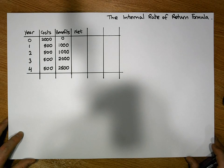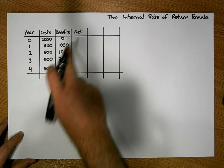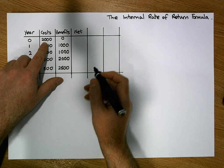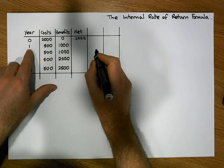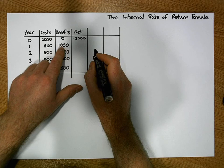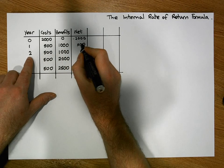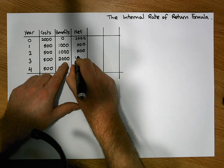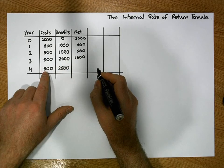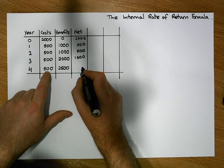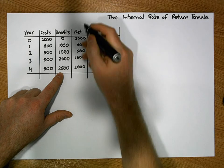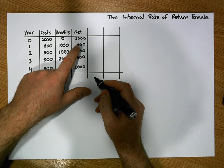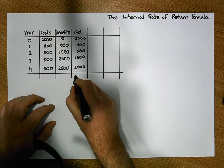More importantly, we're trying to figure out what the interest rate should be for a project to break even. From a naive perspective, in year zero the net position — the difference in benefits to costs — would be -€2,000. In year one, benefits minus costs would be €500. In year two, also €500. In year three, €1,500. And in year four, €2,000.